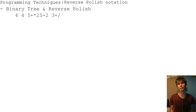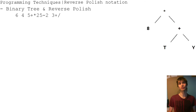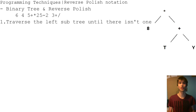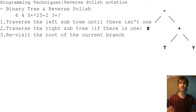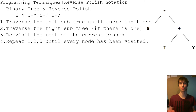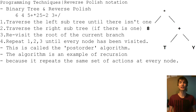You might get a question on the binary tree and then Reverse Polish. The Reverse Polish expression is: 6, 4, 5, plus, times, 25, minus, 2, 3, plus, divide. The steps you take are: traverse the left subtree until there isn't one, traverse the right subtree if there is one, then revisit the root of the current branch. Repeat steps 1, 2, and 3 until each node has been visited. This is called the post-order algorithm, and it is an example of recursion because it repeats the same set of actions at every node.